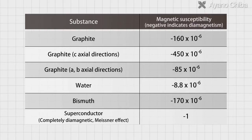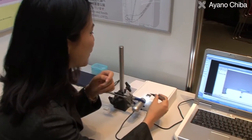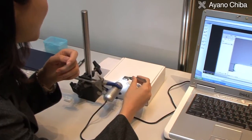The absolute value of magnetic susceptibility in graphite is small, so in practice it is difficult to use diamagnetic materials for levitation directly, but they can be used to stabilize magnetic levitation.